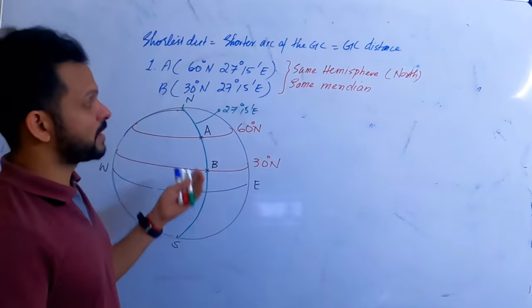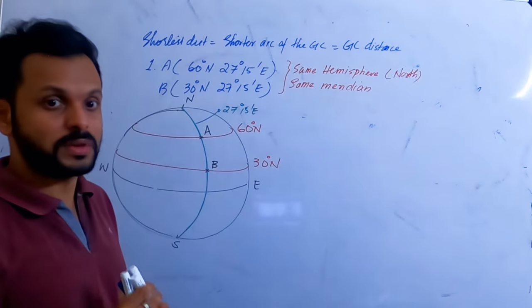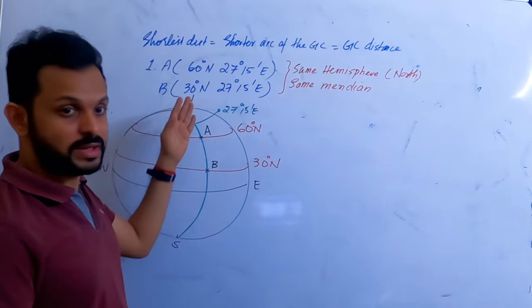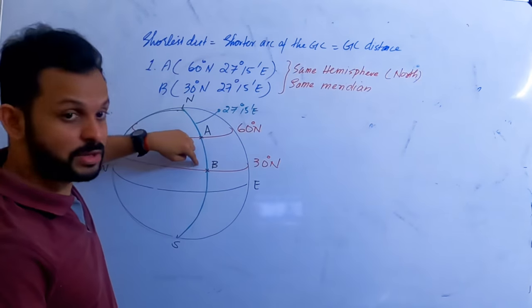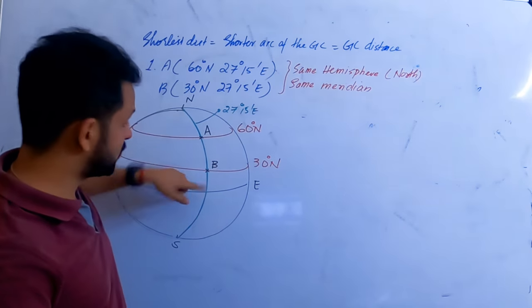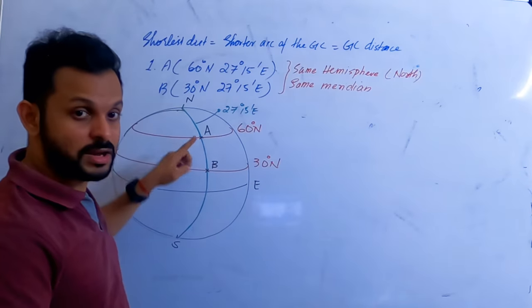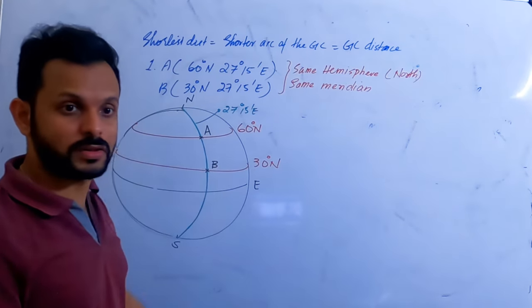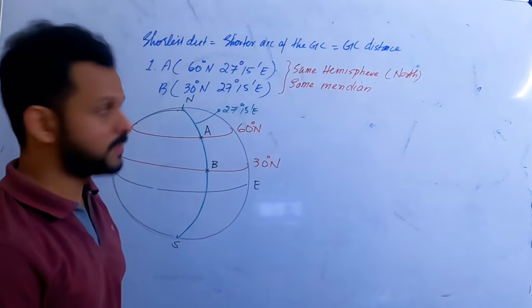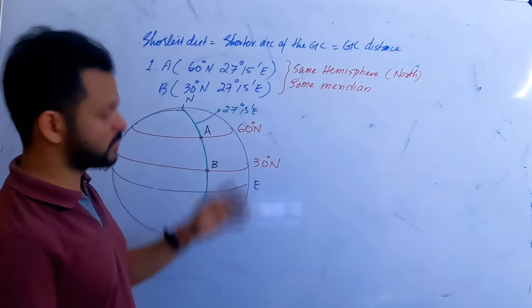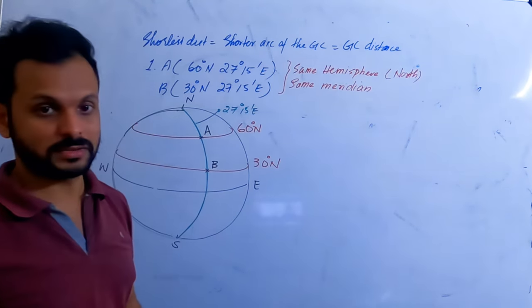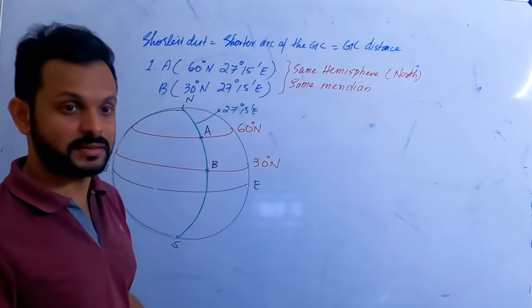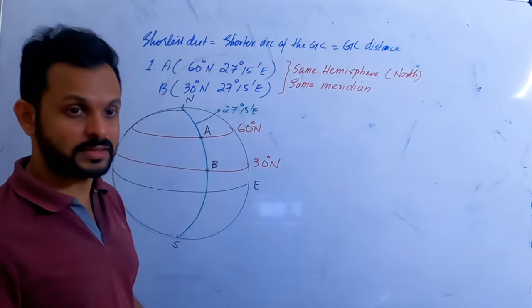In this question it might not be really significant, but in most questions it can be significant. If you are travelling from A to B, and you mark A and B incorrectly, you are travelling towards south when you should be going north — the same magnitude but the wrong direction. Now, we are asked to find the shortest distance. How do you find the shortest distance? The shortest distance between any two points is the shortest arc of the great circle passing through those two points.